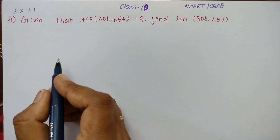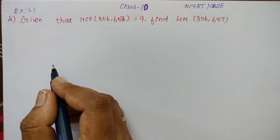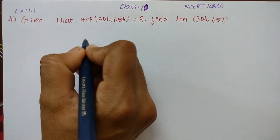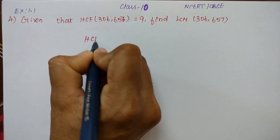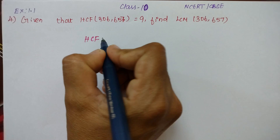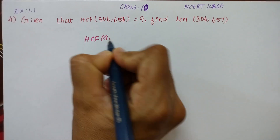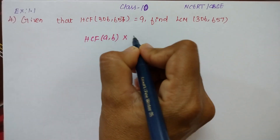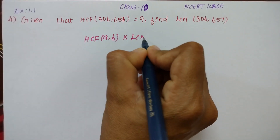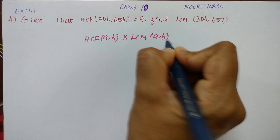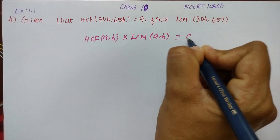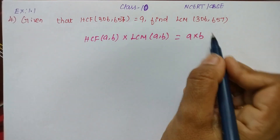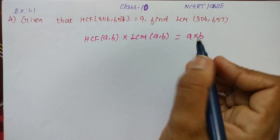HCF is given, and we need to find LCM. We already know the relationship: HCF of A, B multiplied by LCM of A, B equals A into B — the product of the numbers.